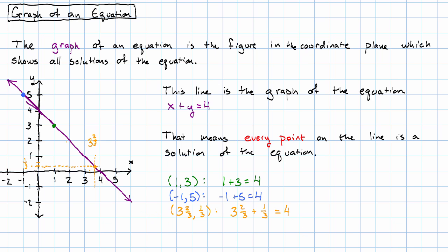Every single point on the line, both the integer ordered pairs and the points in between, is a solution to the equation. And that's the claim that we're making if we say that we have the graph of an equation on our hands.